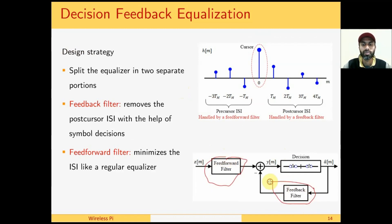The feedback filter has as input the estimates of data symbols â(m), and the feedforward filter has as input the matched filter output z(m). The feedback filter removes the postcursor ISI with the help of symbol decisions, while the feedforward filter minimizes the ISI like a regular equalizer.